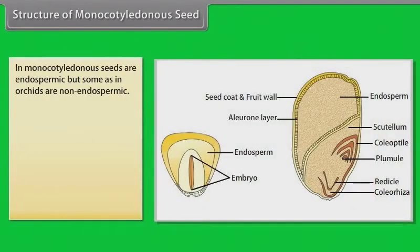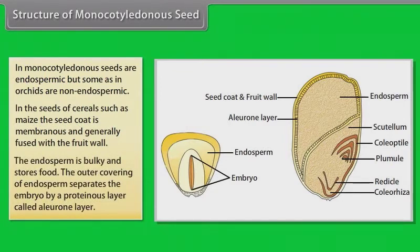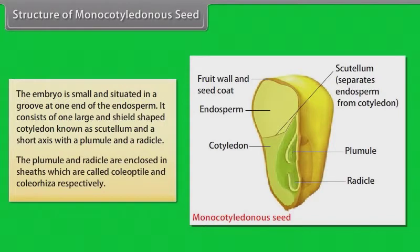Monocotyledonous seeds are endospermic, but some, as in orchids, are non-endospermic. In the seeds of cereals such as maize, the seed coat is membranous and generally fused with the fruit wall. The endosperm is bulky and stores food; the outer covering of endosperm separates the embryo by a proteinous layer called the aleurone layer. The embryo is small and situated in a groove at one end of the endosperm. It consists of one large shield-shaped cotyledon known as the scutellum, and a short axis with a plumule and a radicle. The plumule and radicle are enclosed in sheaths called coleoptile and coleorhiza respectively.